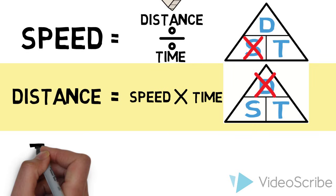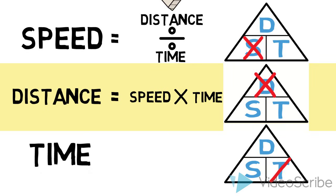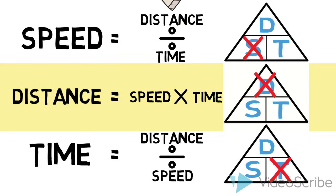Now for time an object has travelled, cover up the T. You are left with distance over speed, so you need to divide distance by speed.